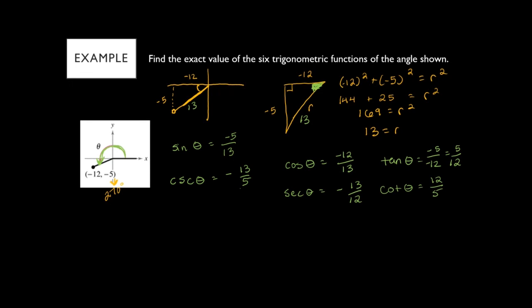From there, we have found the exact values of all six trig functions for angle theta without actually figuring out what theta was. As long as you're given an ordered pair, you can draw your right triangle, use the Pythagorean theorem, and fill in the rest.